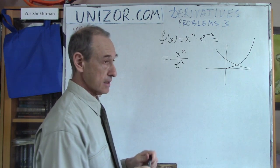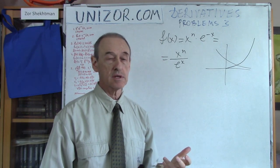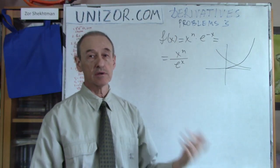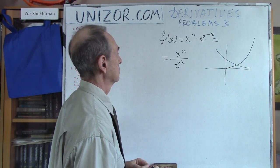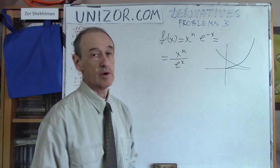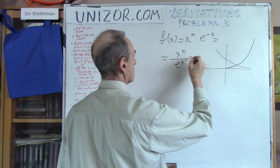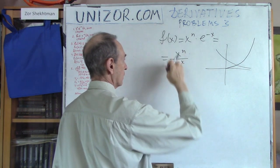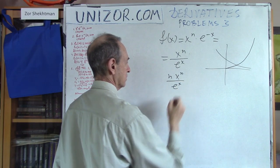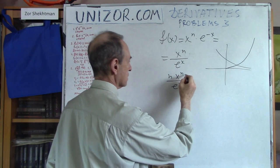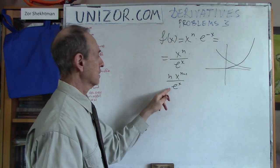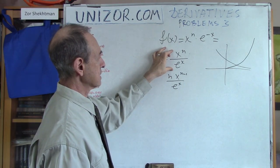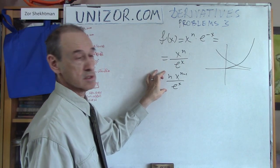L'Hôpital's rule states that if you have a ratio of two functions, it behaves when x goes to some limit — including infinity — exactly the same way as the ratio of their derivatives. The derivative of the numerator would be n·x^(n−1), and the derivative of e^x is e^x. So the limit of this as x goes to infinity equals the limit of the ratio of derivatives.